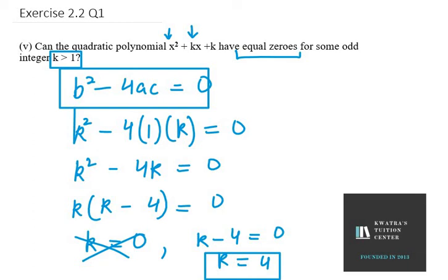The value k = 4 shows that there exists no value of k where the quadratic polynomial x² + kx + k has equal zeros for odd integer k greater than 1.